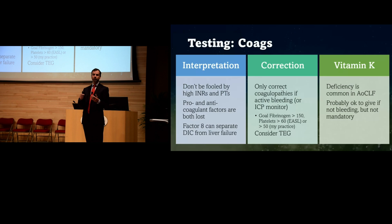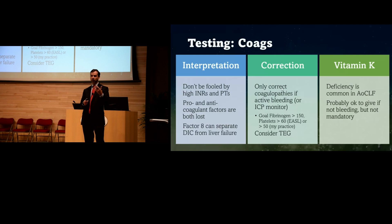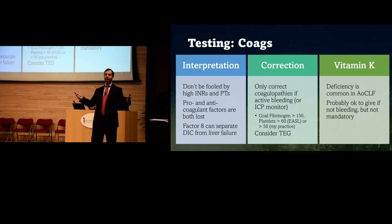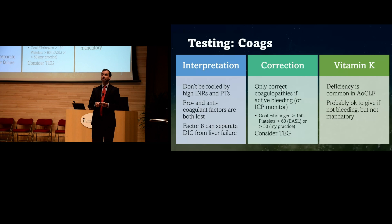Interpreting coags is very important. These patients lose both pro- and anticoagulant factors, and the change in PT and INR reflects mainly the loss of pro-coagulant factors — it doesn't tell you about the balance. A common mistake is assuming these patients will bleed because their INR is elevated. An INR of 4, 5, or 6 doesn't necessarily mean they're prone to bleeding — they may actually be hypercoagulable.